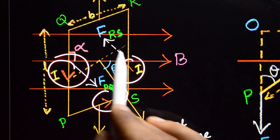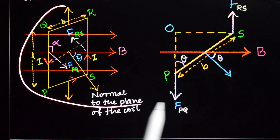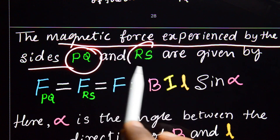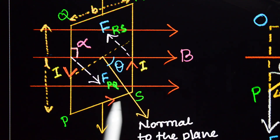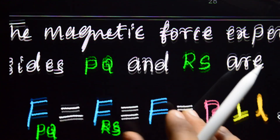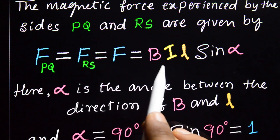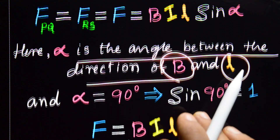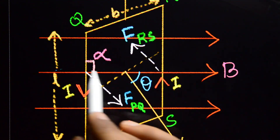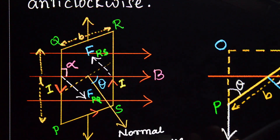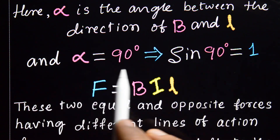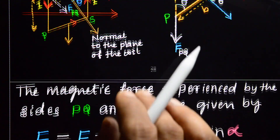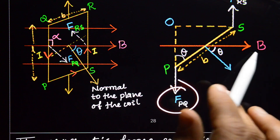The magnetic force experienced by sides PQ and RS is given by F = Bil sin(alpha). Here alpha is the angle between the direction of the magnetic field and the length of the side. Since the sides PQ and RS are perpendicular to the field, alpha = 90°, and sin(90°) = 1, so F = Bil. Forces F_PQ and F_RS are equal in magnitude but opposite in direction.